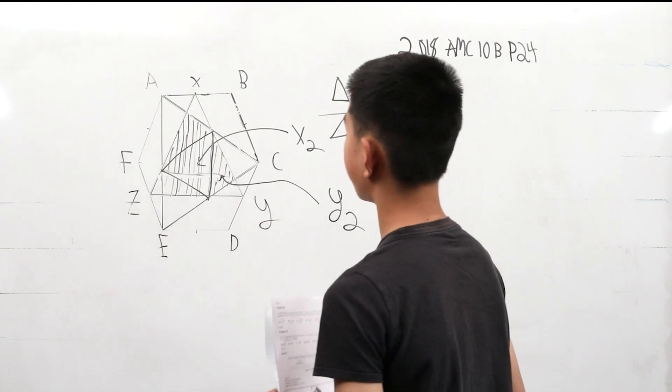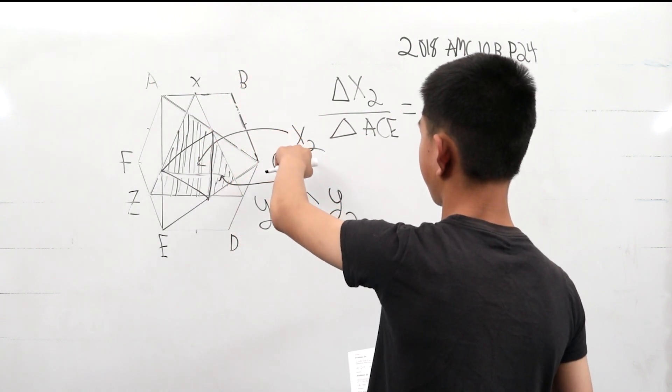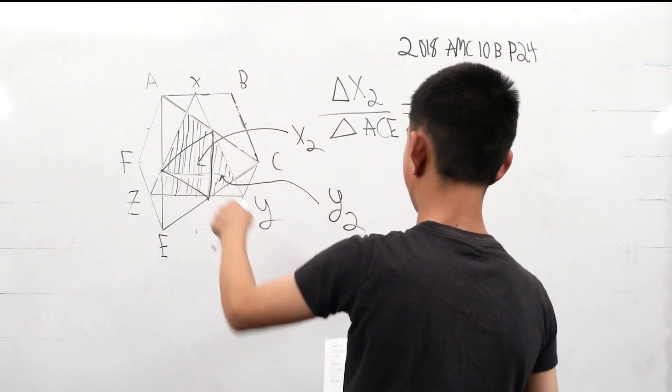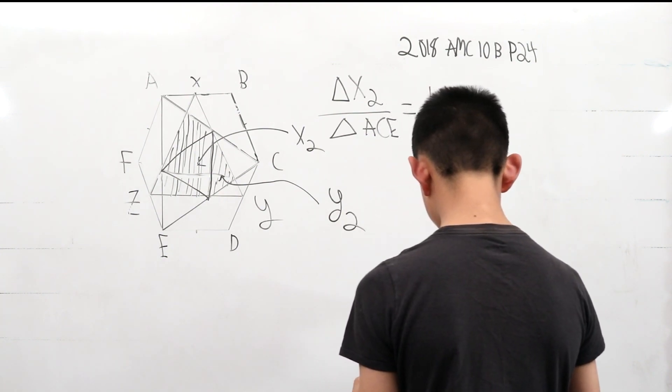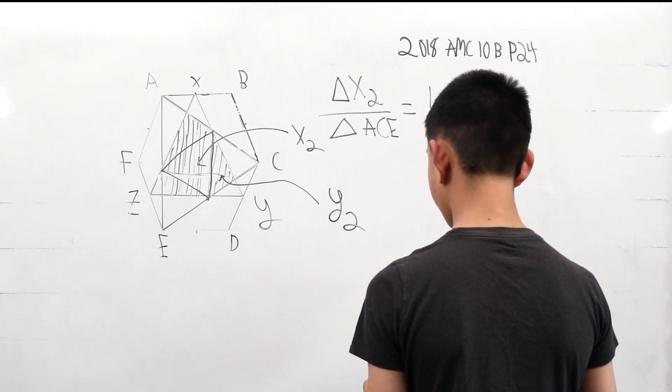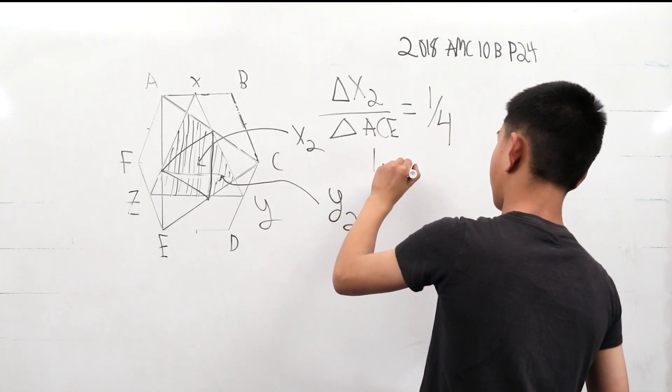And it still wants us this area, so we can simply do this by area addition by finding X2 and 3 times the area of a Y2. So now we know that this is 1 fourth plus,